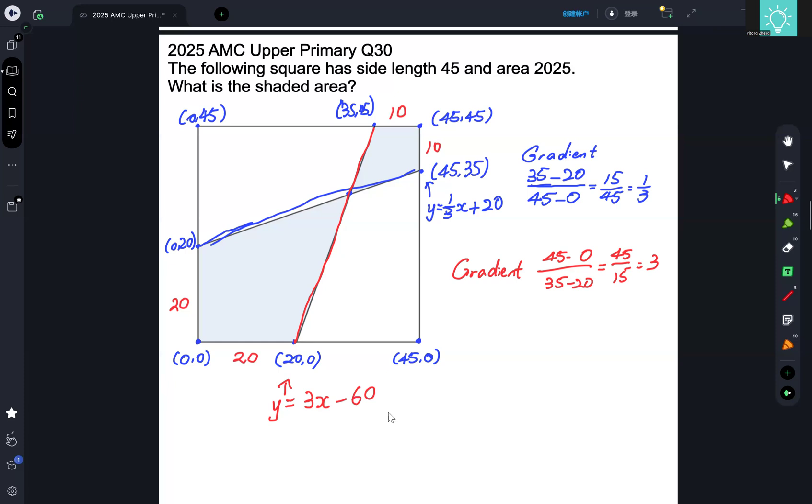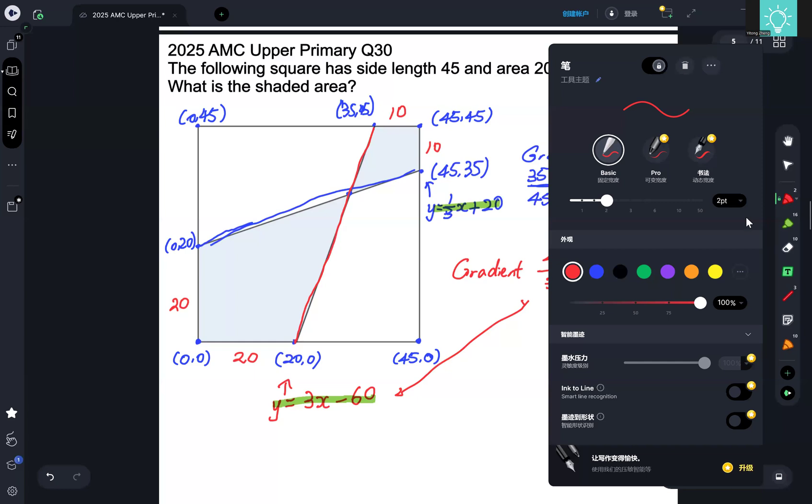So now, these two lines, we have equations. We have the equation y equals a third of x plus 20, and we have y equals 3x minus 60. So now, we try and work out the intersection points.